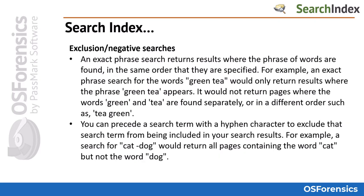An exact phrase search returns results where the phrase of words are found in the same order that they are specified. For example, an exact phrase search for the words "green tea" would only return results where the phrase "green tea" appears. It would not return pages where the words green and tea are found separately or in a different order such as "tea green."